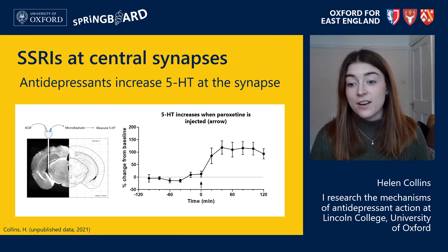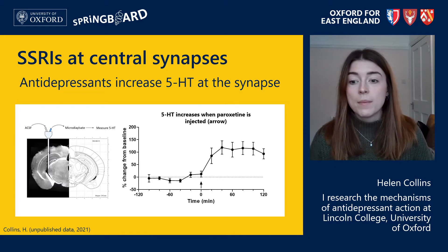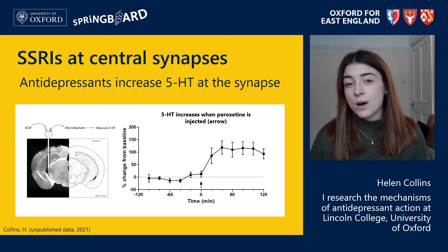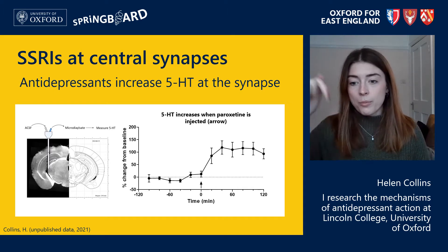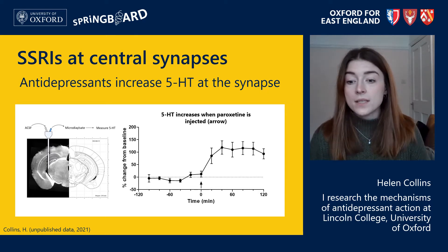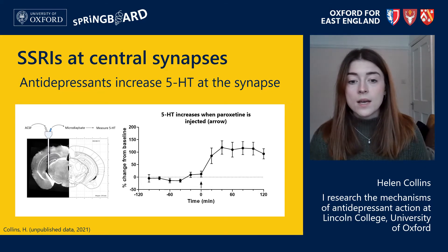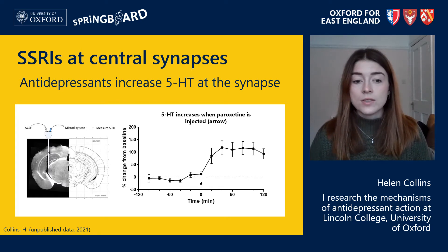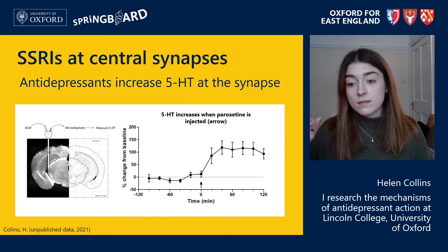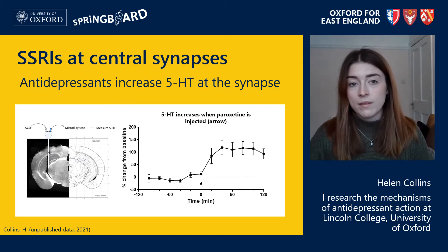I wanted to give you a little example of what this looks like in practice. This is data from an experiment I've done recently where I can measure 5-HT released from neurons. This technique is called microdialysis and it works like dialysis in the kidney — you put a probe into the brain and it samples extracellular 5-HT that's been released from neurons. In this case I'm doing it in part of the hippocampus, which is a structure associated with anxiety. What you can see on the right is that when I inject paroxetine, which is an SSRI, the levels of 5-HT released go up by about 100% quite stably, demonstrating that giving an SSRI does increase 5-HT in the synapse.